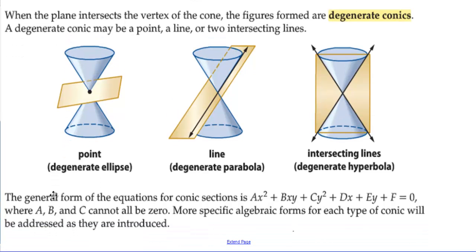The general form of the equations for conic sections is ax² + bxy + cy² + dx + ey + f = 0, where a, b, and c cannot all be zero. More specific algebraic forms for each type of conic will be addressed as they are introduced.